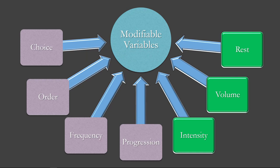So let's jump right into the seven modifiable variables. The ones in green are separated because those ones influence each other directly. If you reduce the rest you take between reps, that's probably going to reduce the amount of volume and/or intensity you can do. If you go up in intensity, that's going to reduce volume. The others in the pinkish-gray color are important, but they don't necessarily have a direct relationship with the other three.